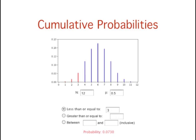We toss a coin 12 times. What is the probability that we get from 0 to 3 heads? The answer is found by computing the probability of exactly 0 heads, exactly 1 head, exactly 2 heads, and exactly 3 heads.